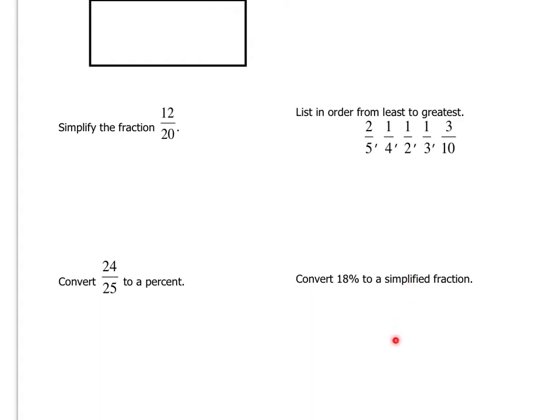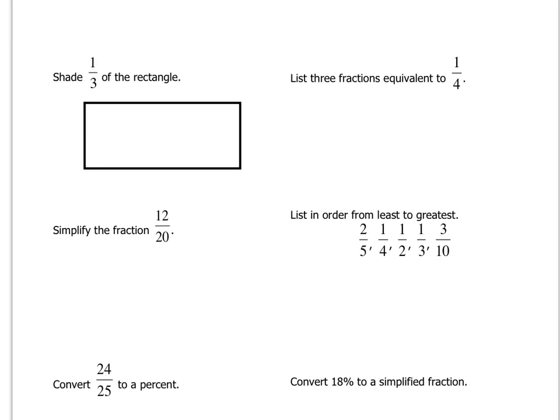I'm going to move back up here to list three fractions equivalent to one quarter. Here essentially what we're trying to do is we're taking the fraction one quarter and we're going to come up with three new fractions that are equivalent to one quarter. The denominator doesn't have to be anything in particular. I'll write since we have to do three of them, I'll do one quarter here, one quarter here, and one quarter here.